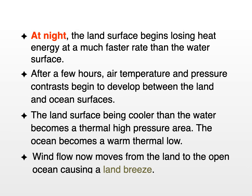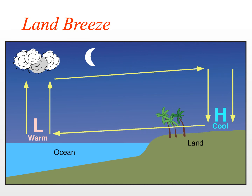At night, the land surface begins losing heat energy at a much faster rate than the water surface. After a few hours, air temperature and pressure contrasts develop between land and ocean surfaces — land is cooler, ocean is warmer. The cooler land surface causes a thermal high pressure area to develop with descending cool air, while the warmer air over the ocean causes a warm thermal low to develop. At night, we get a land breeze: the wind blows from the land to the ocean. Over land, we have a cool high pressure system with descending air; over the ocean, relatively warm rising air completes the circulation cell.